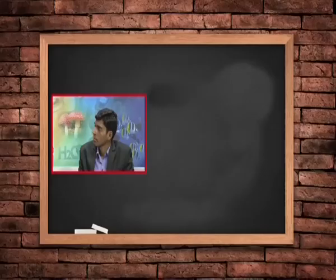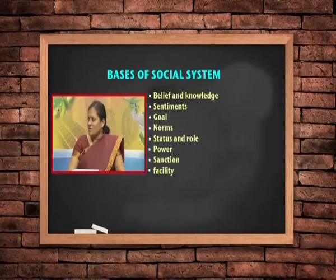Social system is also related to the cultural system. For example, when a child grows up, parents want to arrange a marriage, but there are rules and regulations — the legal age limit is 21 for men and 18 for women as allocated by the government. When we talk about the basis of social system, it is about its constituent elements or foundations on which a system rests. The basis includes beliefs, norms, power, sanction facility, how a society perceives sentiments, and how a society perceives goals.